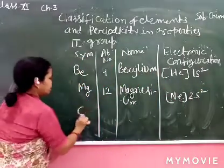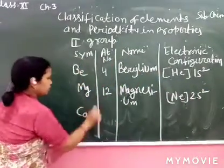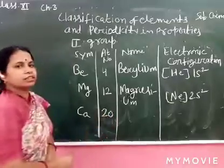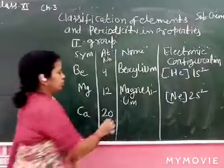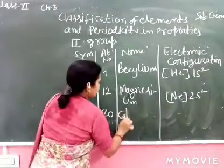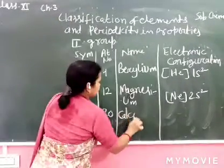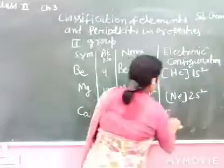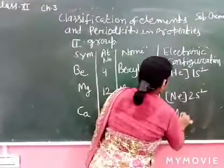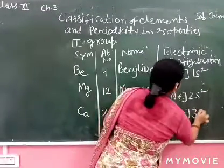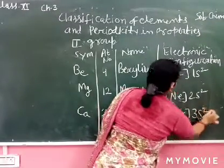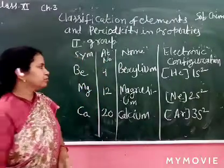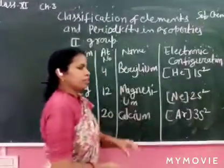Next is Calcium. Its atomic number is 20. What is its name? Calcium. And its electronic configuration is [Ar] 3s². Is it clear now?